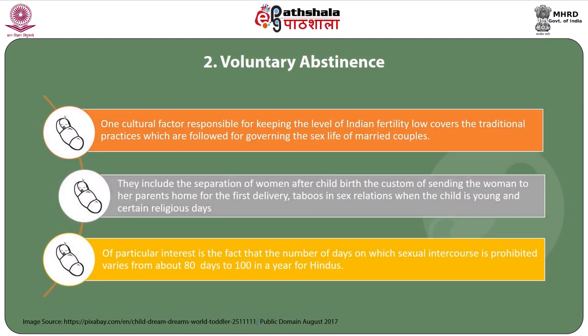Voluntary abstinence is one cultural factor responsible for keeping the level of Indian fertility low. It covers the traditional practices followed for governing the sex life of married couples. These include the separation of women after childbirth, the custom of sending the woman to her parents' home for the first delivery, and taboos on sex relations when the child is young and on certain religious days. Of particular interest is the fact that the number of days on which sexual intercourse is prohibited varies from about 80 to 100 days in a year for the Hindus.